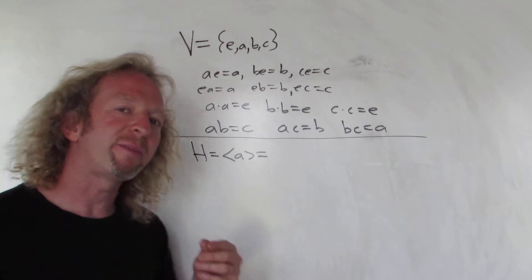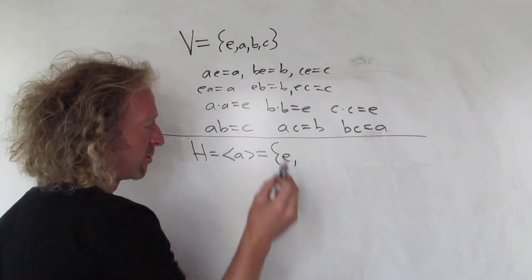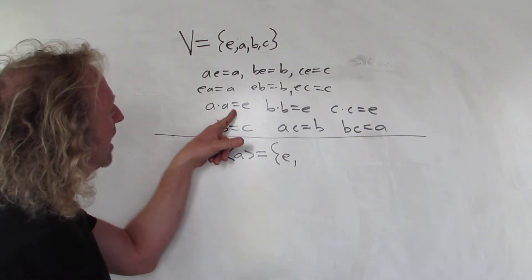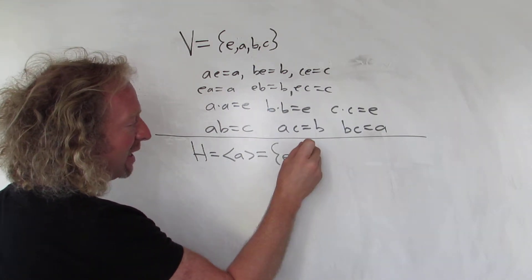So this is all of the powers of A. So E is always in that subgroup by definition. The subgroup has to contain E, right? And then A times A is going to be E, and it has to contain A, obviously. And that's it.